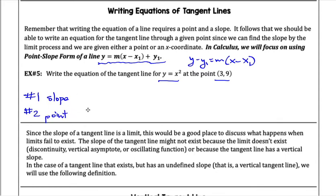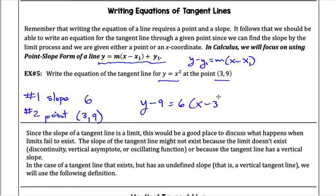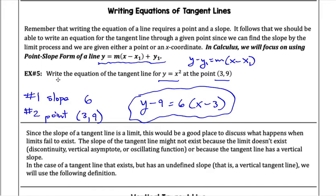I have always seen point-slope form as Y minus Y1 equals M times X minus X1. Point-slope form is going to be helpful to us because that's the kind of information we usually get. This says write the equation of the tangent line for Y equals X squared at the point (3, 9). The two things we need are slope and a point. The slope at X equals 3 was 6, so I know my tangent line has slope 6 and point (3, 9). So I'll write Y minus 9 equals 6 times X minus 3.